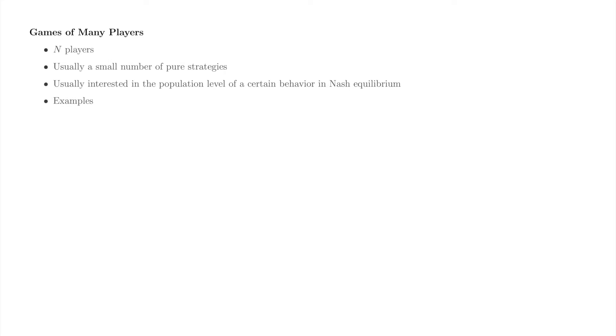A common application of static games of complete information is to study very large games. We're going to call these games of many players because we allow ourselves to consider a large number of players. However, these models are typically adaptable to as few as two players as well. We say that our game has capital N players. Typically, we consider a small number of pure strategies per player, although we don't have to.